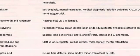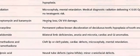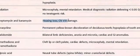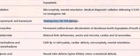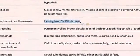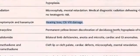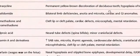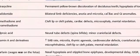Streptomycin and kanamycin, which are aminoglycosides: ototoxicity, like in adults and also in the fetus — hearing loss and cranial nerve 8 / vestibulocochlear damage.